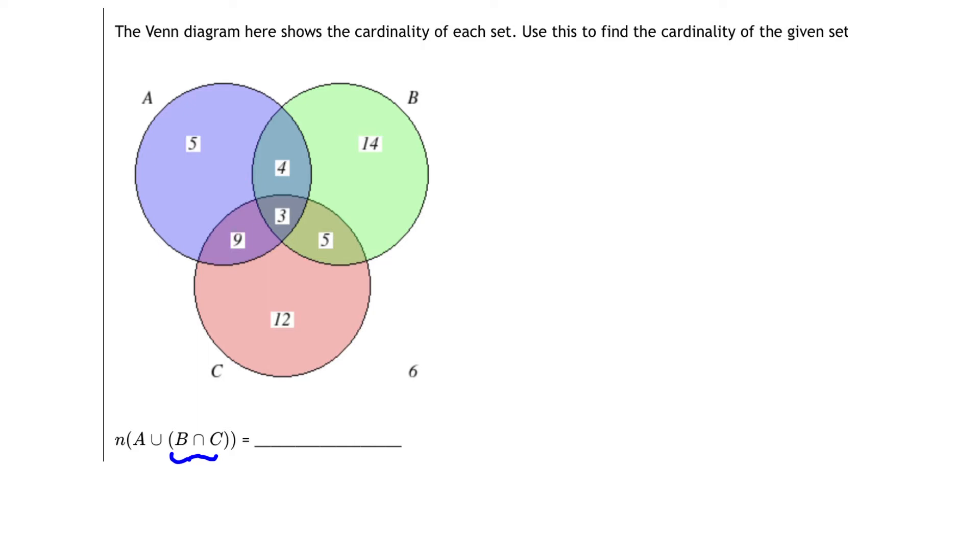B intersect C, notice, falls right here in this area. This is B intersect C. It's the set where B and C overlap.